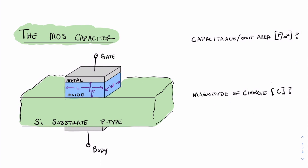Here again, we see the MOS capacitor, and we're going to do the same thing with it. We're going to define a capacitance per unit area and a magnitude of charge — in particular, the magnitude of charge under the gate stack. We are particularly interested in this because it helps us understand how charges move in a MOSFET from source to drain. The capacitance per unit area is a simple translation from the parallel plate capacitor. We define the capacitance as C sub ox, which equals the permittivity of the oxide divided by the thickness of the oxide.